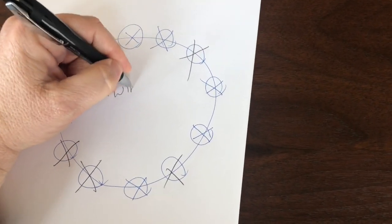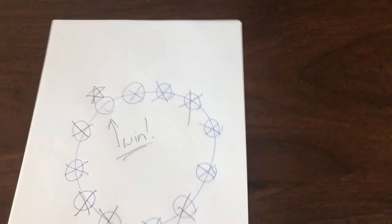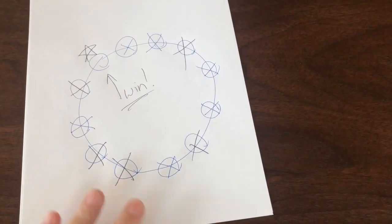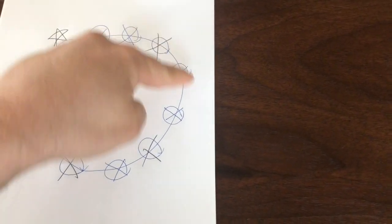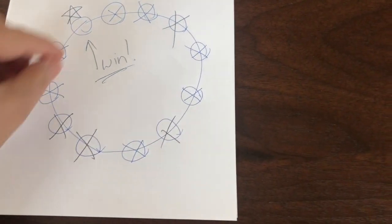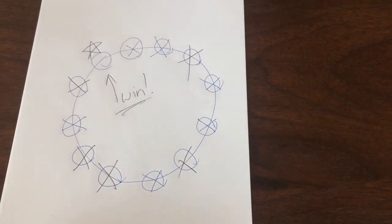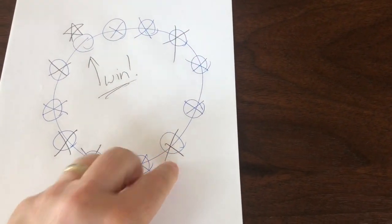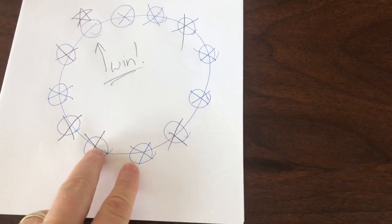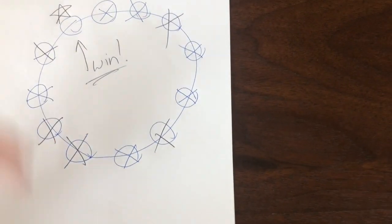And that is how you play Circular Nim. Basically, you draw a circle, you draw a bunch of other circles. The actual number of circles doesn't really matter. You go back and forth, crossing off one or two at any given time. But when you cross off two, they have to be adjacent. And whoever crosses off that last one is the winner! So this is another opportunity for you to do some recreational math and we're hoping that you go have some fun with your families.